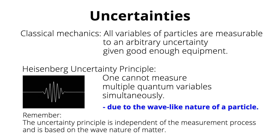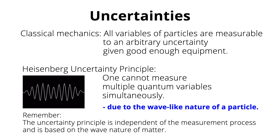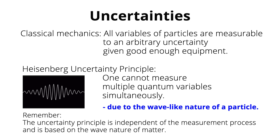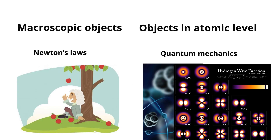Hence, quantum mechanics is accepted as the only correct description of physics. However, for practical calculations on macroscopic objects in classical mechanics, it is sufficient to use Newton's laws. And for calculations of atomic level phenomena, we use quantum mechanics.